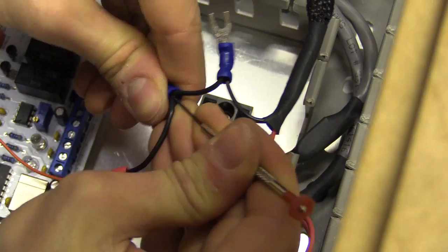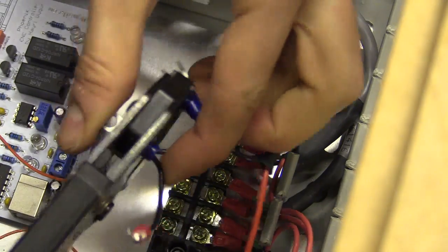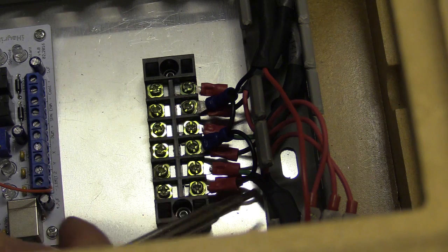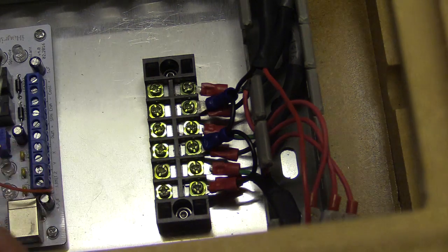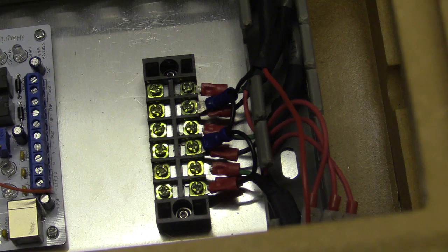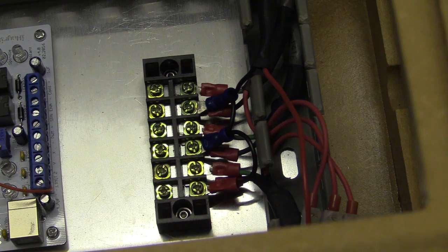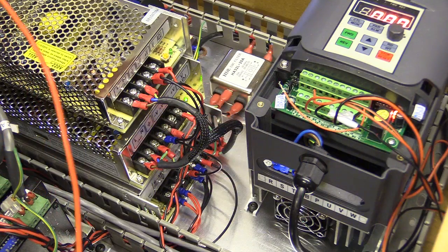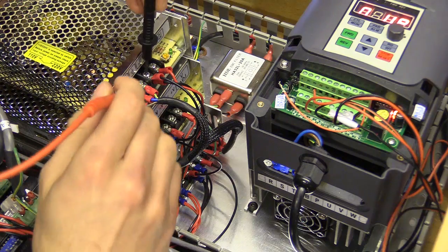I also daisy chain the ground terminals on the barrier block to the ground on the 12V power supply unit. So I've just wired the ground to the black wire that's going to the aviation panel mounts, and those in turn go to the blue wire on the proximity sensors. It is really important to make sure all the power supply units are connected so the ground potential between all three are the same.